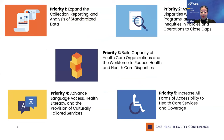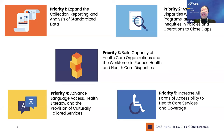Here we will provide an overview of our framework priorities and potential proposal topics. These examples are meant to give you a sense of the types of proposals that align under each priority, but are not a comprehensive list. Priority one: expanding the collection, reporting, and analysis of standardized data. Examples include innovations in self-reported patient data in underserved communities, data standardization for social determinants of health, data platforms that facilitate improved whole person care, social determinants of health data exchange for chronic disease prevention initiatives, and data strengthening partnerships between public health, health care delivery, behavioral health, and community-to-clinical linkages.